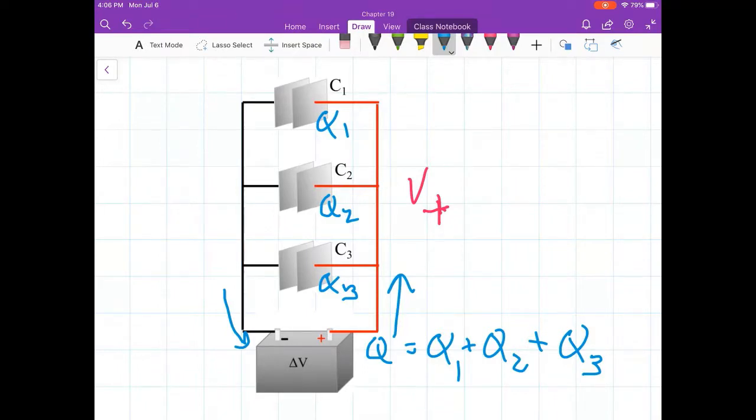That first capacitor C1, in order for that thing to be stable, you're going to pull off minus Q1 and it'll head back to the battery. The second one, minus Q2, head back to the battery. Third one, minus Q3, head back to the battery. So you have the total charge Q leaves one side, returns the other side. No difference in charge of the battery before and after.